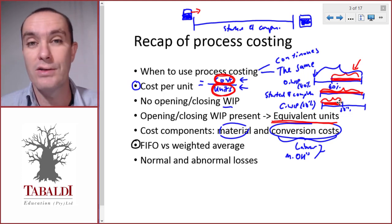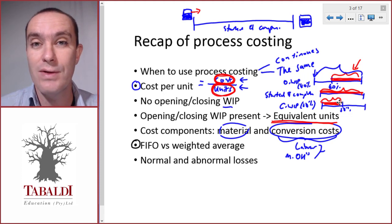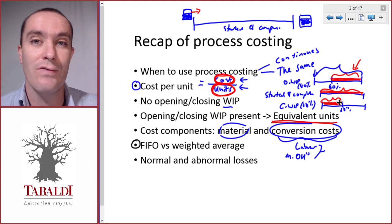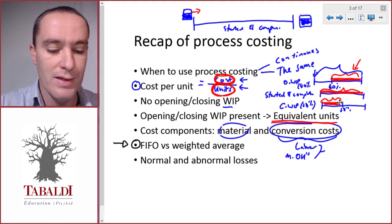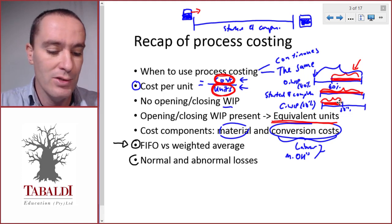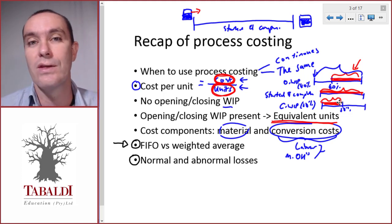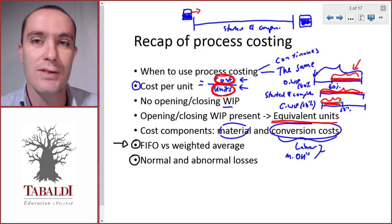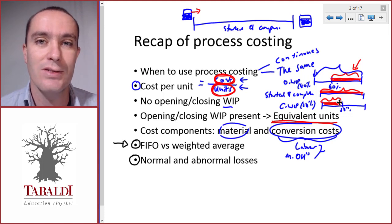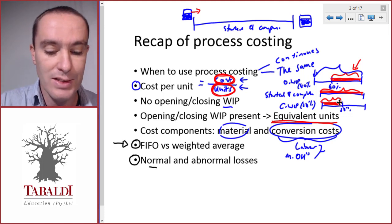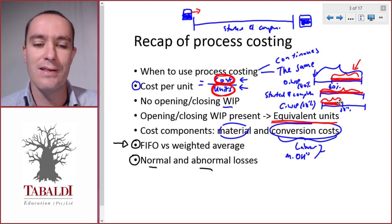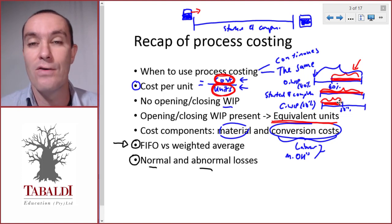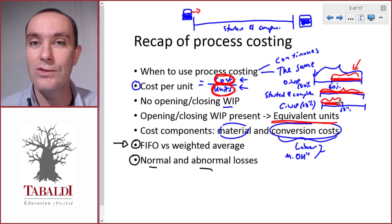You need to be comfortable doing process costing using either the first-in first-out method or the weighted average method of inventory valuation — you must be very comfortable with both methods. We also need to be able to deal with normal and abnormal losses in process costing, and know the difference between them.